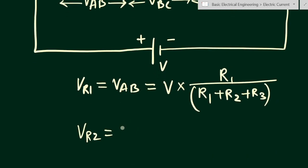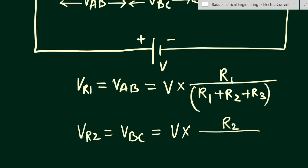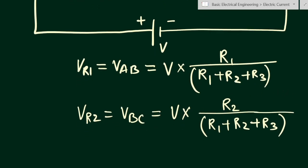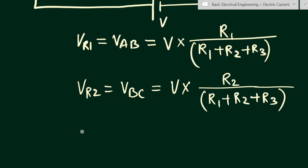Now let us find out the voltage across R2. V_R2 will be equal to V_bc, because we have considered points b and c across R2. So V_R2 equals V into R2 divided by R1 plus R2 plus R3. We put R2 in the numerator since we are finding the voltage drop across R2, and add all three resistances in the denominator.